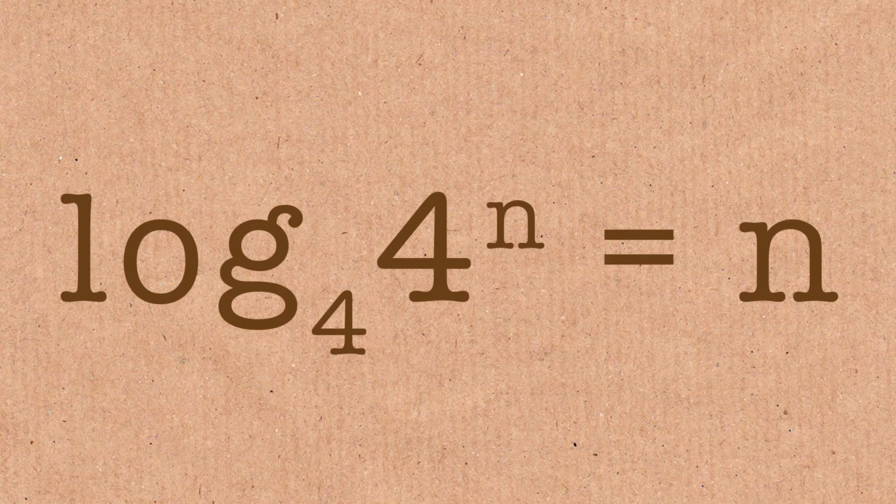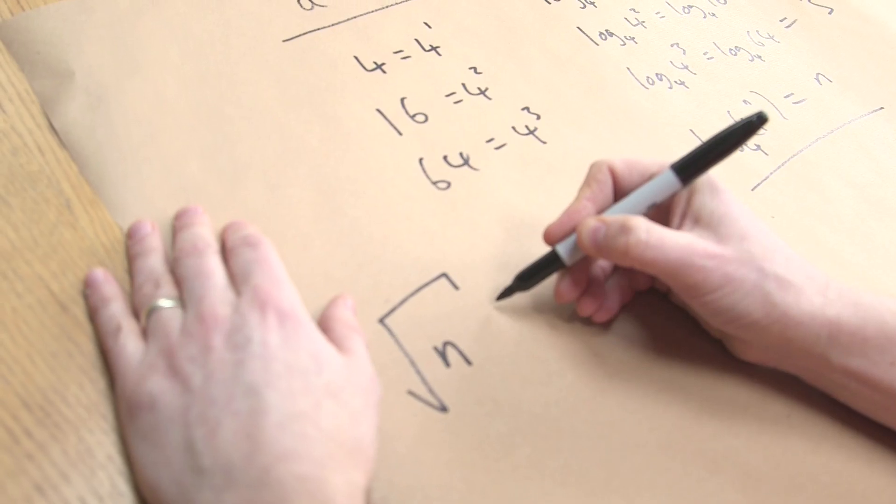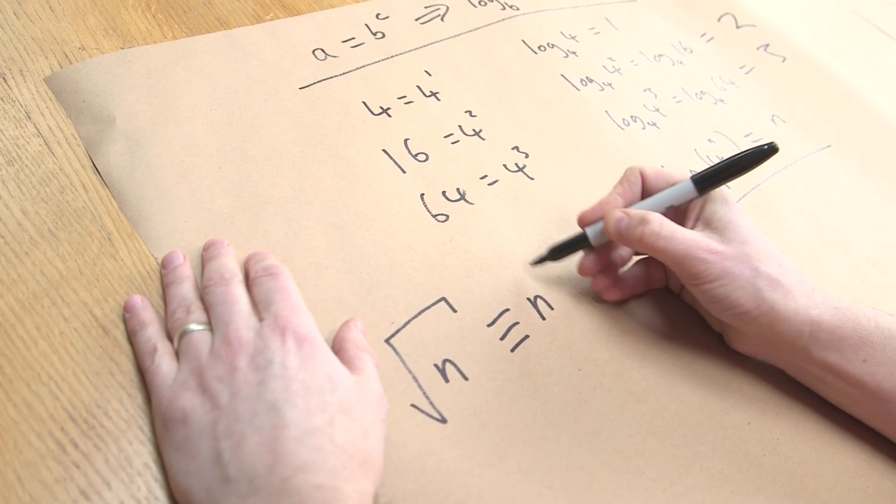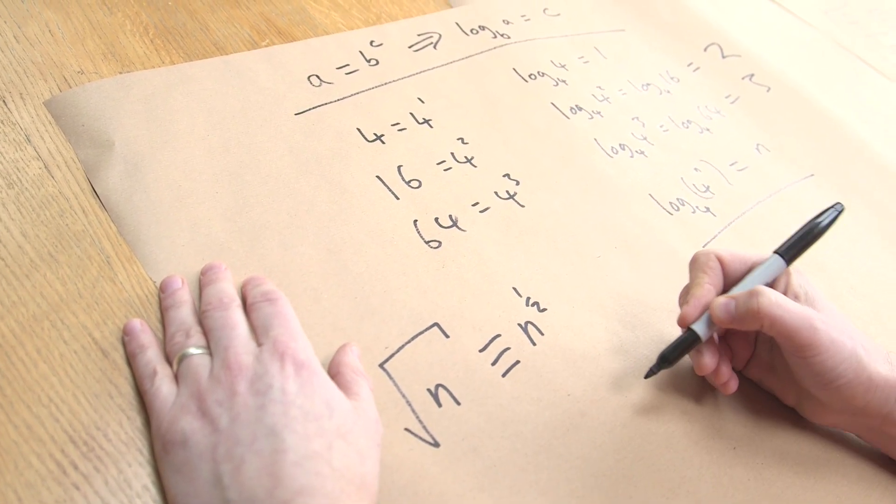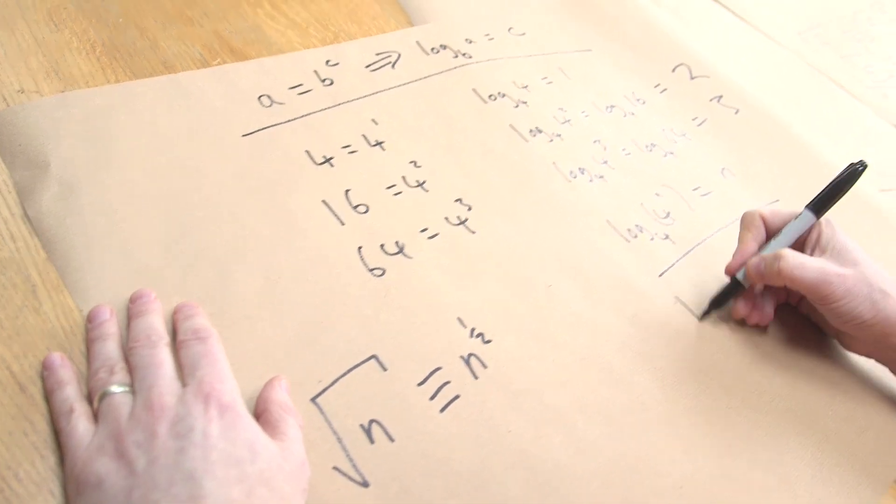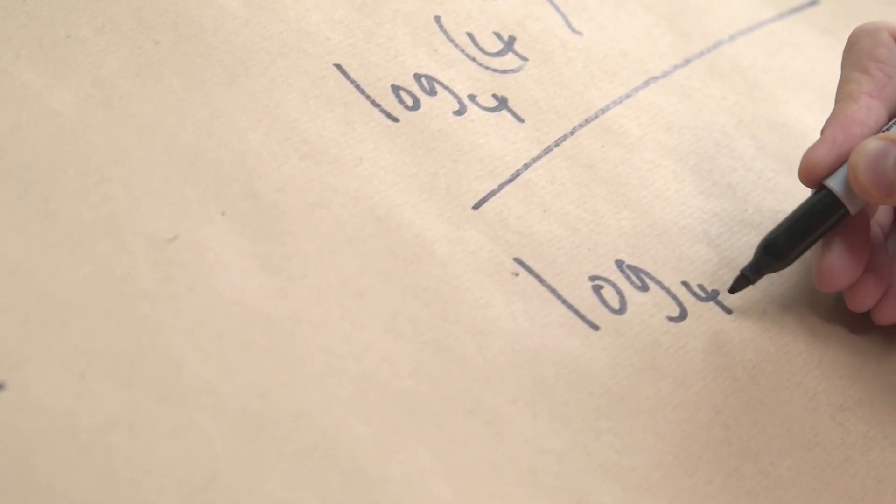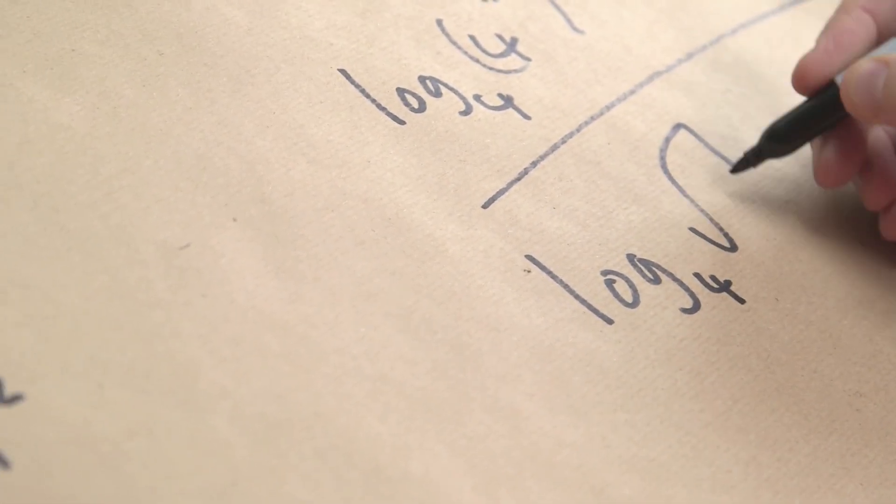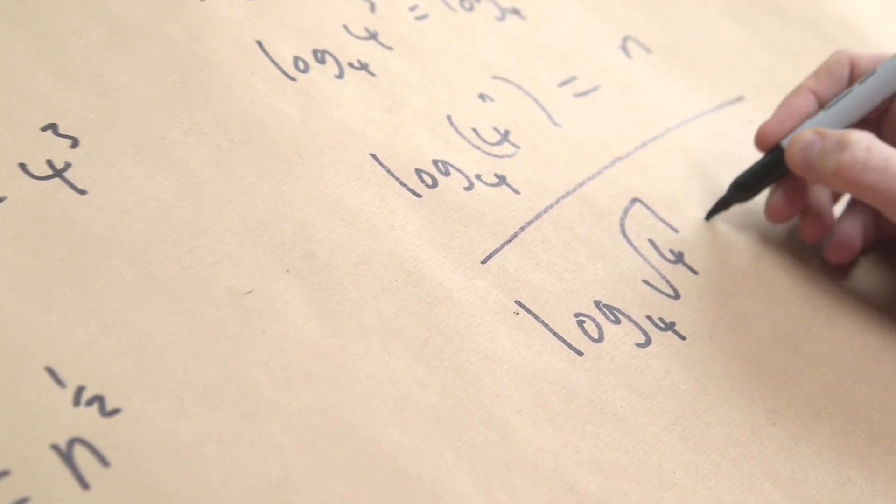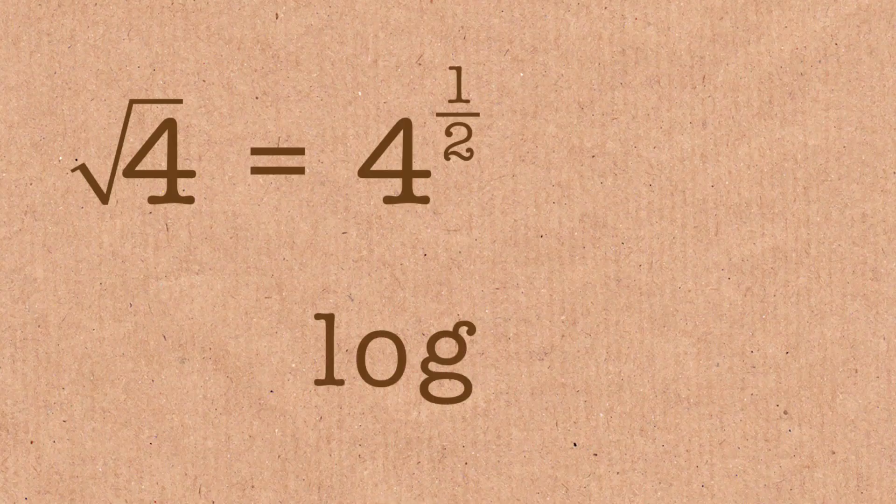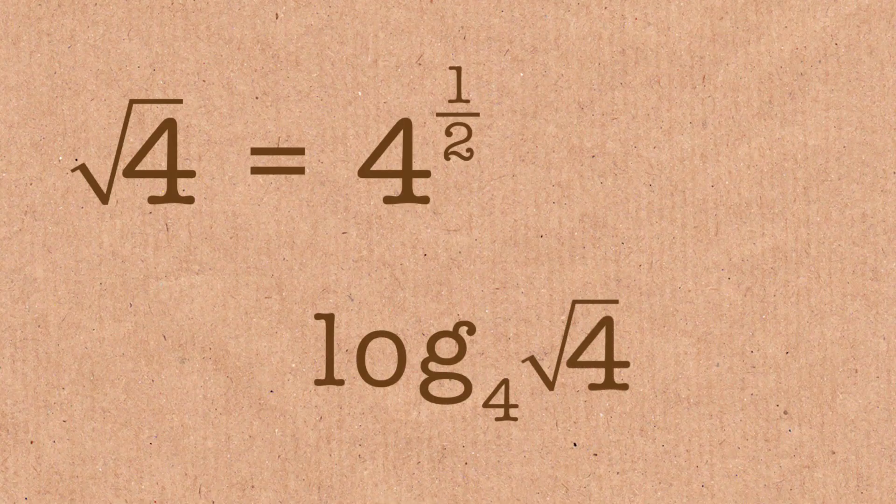n doesn't have to be a whole number. So the square root of n is the same thing as n to the half. So let's translate that here. We have got log the base 4 of the square root of 4, which is actually log the base 4 of 4 to the half equals half.